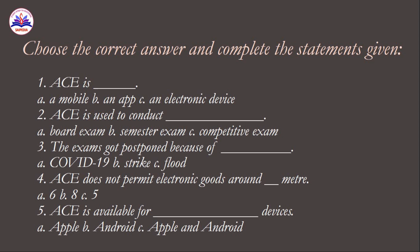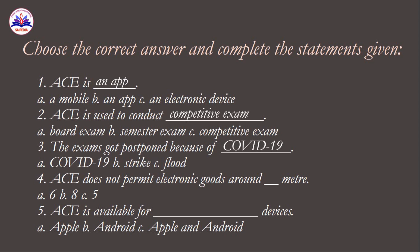The first two tasks are: choose the correct answer and complete the statements given. First: ACEE is an app. Second: ACEE is used to conduct competitive exams. Third: the exams got postponed because of the pandemic. Fourth: ACEE does not permit electronic goods within 10 meters — electronic goods are allowed around 8 meters.